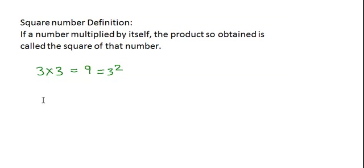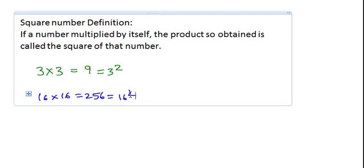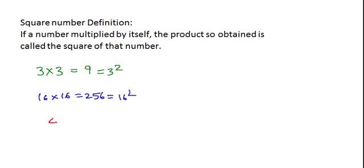Let us take another example: 16 multiplied by 16. We get 256, and it is represented as 16 squared. We say that 256 is the square of 16. Let us consider another example: 4/5 multiplied by 4/5. We will get 16/25. We can say that 16/25 is the square of 4/5.